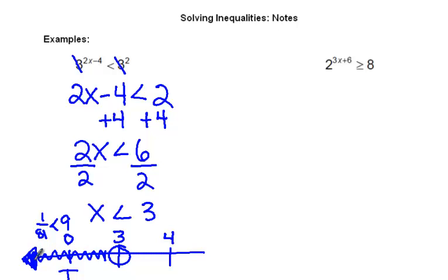And then, when you plug in 3, you do 2 times 3 is 6 minus 4. You get 3 squared is less than 3 squared. And that would be false because the 2 are equal.